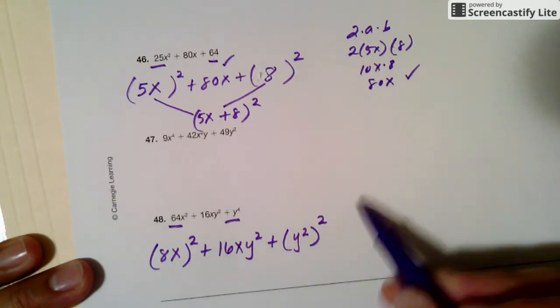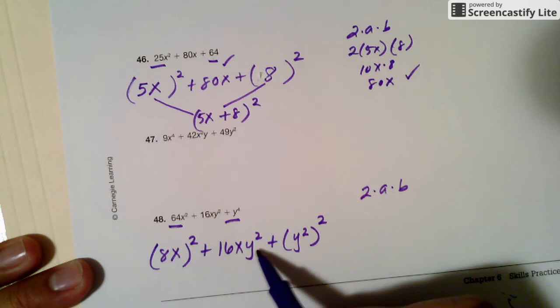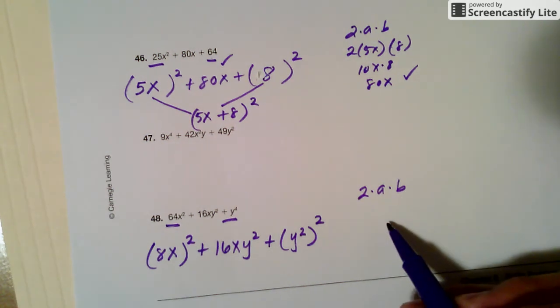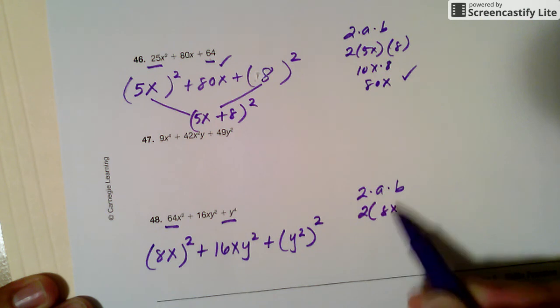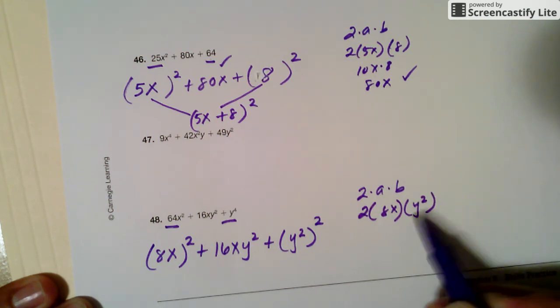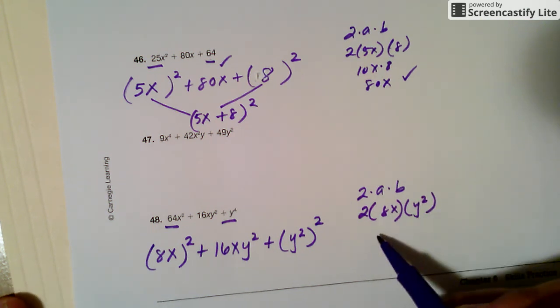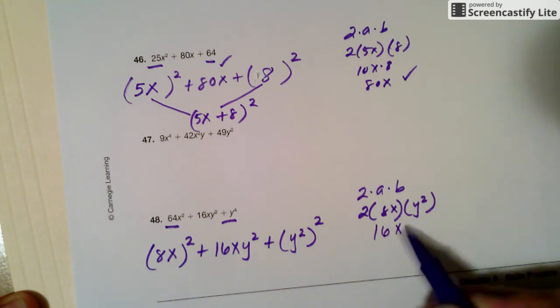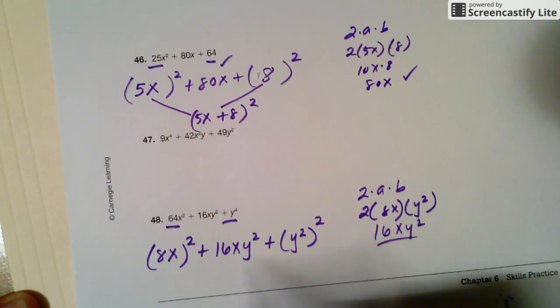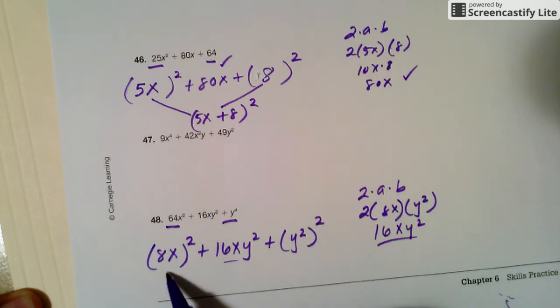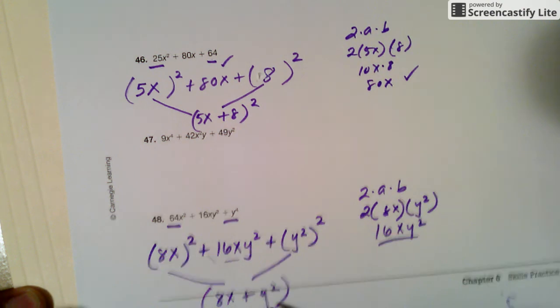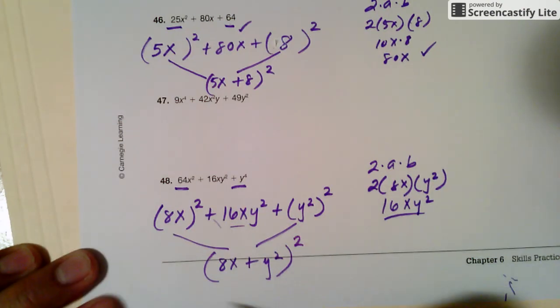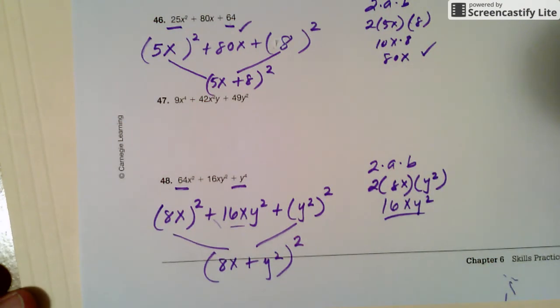So just to check, if 2 times a times b is actually 16xy square, so that it satisfies the perfect square trinomial. 2 times a, and then b. 2 times 8 is 16, and then I have an x and a y square. Hey, that's exactly like what I see here. So I can use the rule. I can just put an 8x there plus a y square, put it in parenthesis, and square it. And that's how we factor perfect square trinomial.